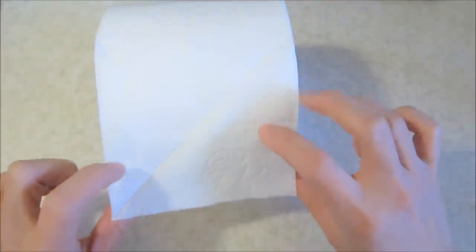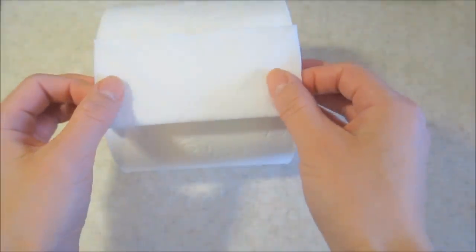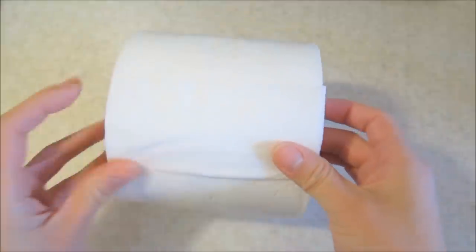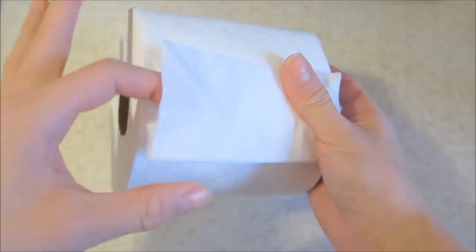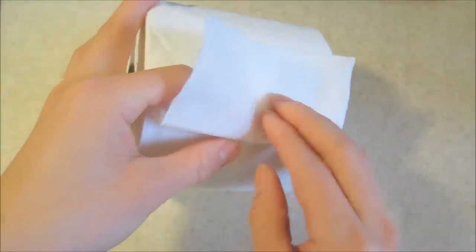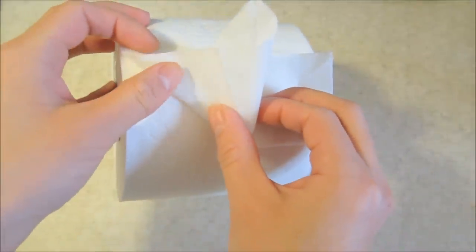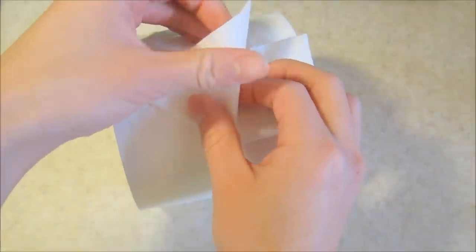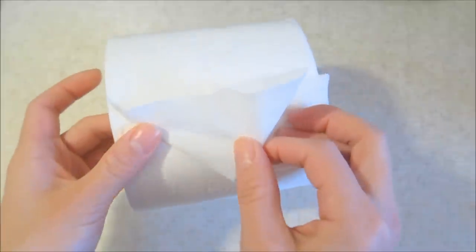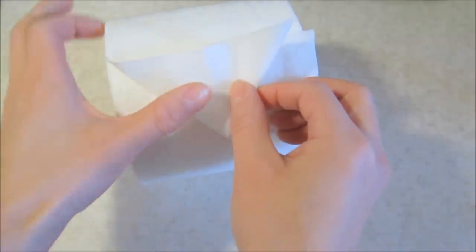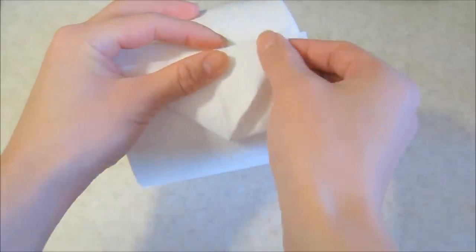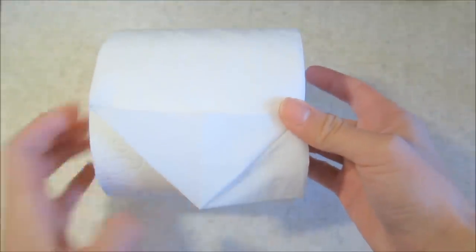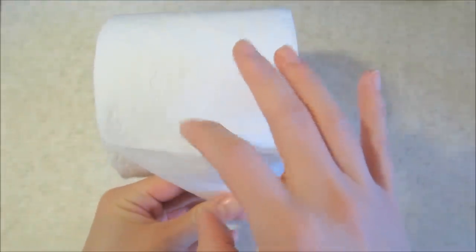Now we're going to fold along that center crease that we made earlier. Then on the left side we're going to push inward along the two diagonal creases to form a triangle like this, and then flatten it. From the top the toilet paper should look like this.